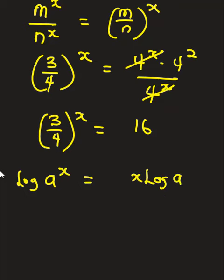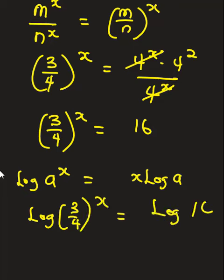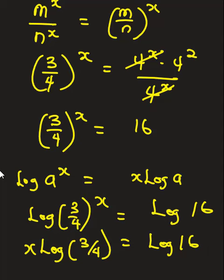So from here, a logarithm function is going to be introduced on both sides of the equation, which gives us log of 3 over 4, raised to the power x, is equal to log 16. From here, this is going to be x log of 3 over 4, equal to log 16.